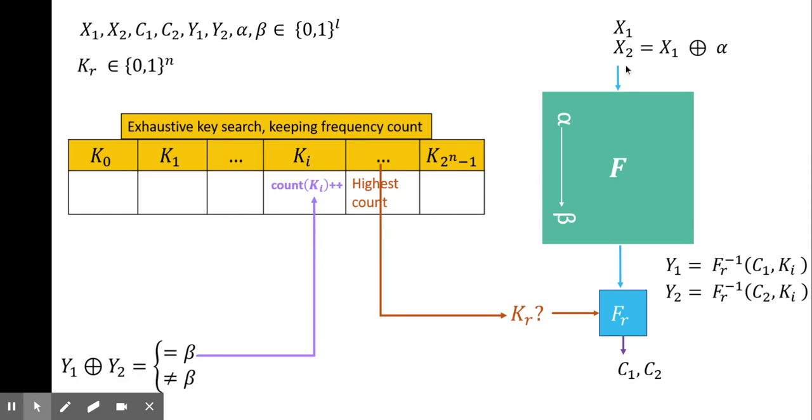We choose any plain text X1; however, since we want input difference as alpha, therefore we have to choose X2 as X1 XOR alpha. Now if we do X1 XOR X2, we will get input difference as alpha. We have the liberty to choose X1 because differential cryptanalysis is a chosen plain text attack.